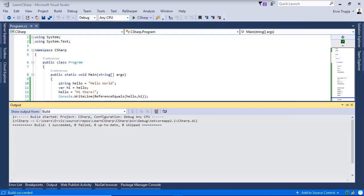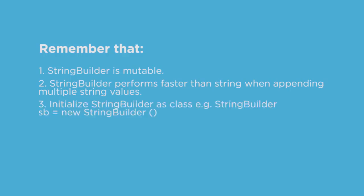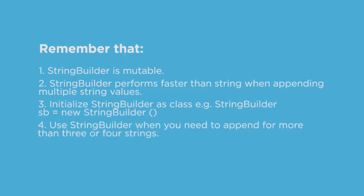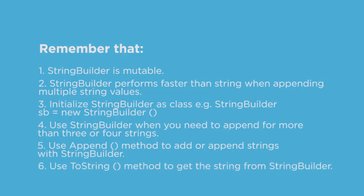Before continuing, it's important to remember that StringBuilder is mutable. StringBuilder performs faster than strings when appending multiple string values. Initialize a StringBuilder like a class, with or without a parameter. Use StringBuilder when you need to append more than three or four strings. Use the Append method to add strings, and use the ToString method to get the string from a StringBuilder.